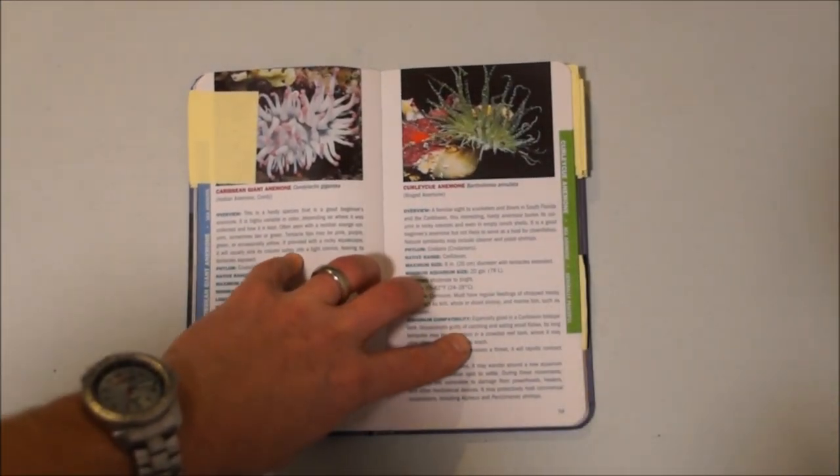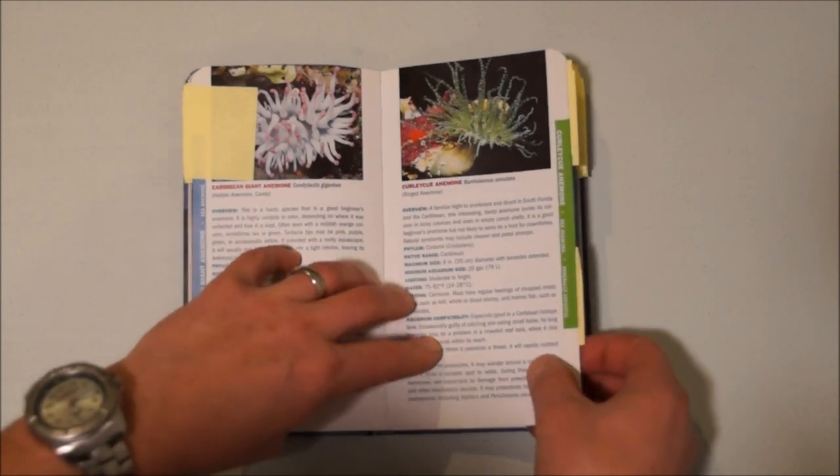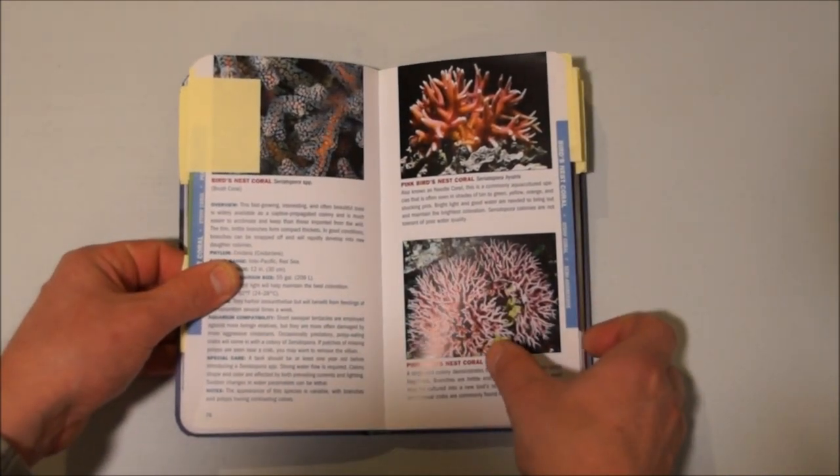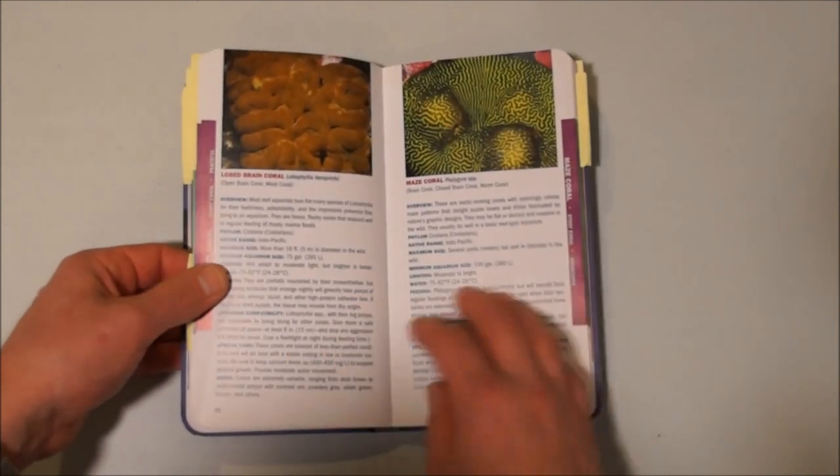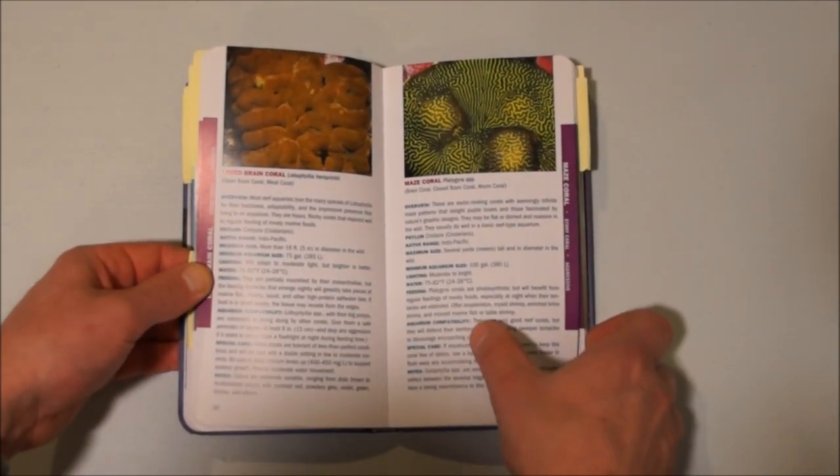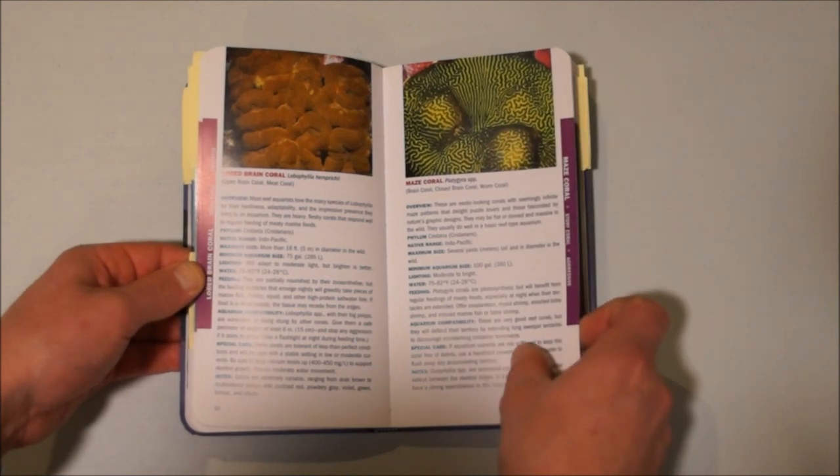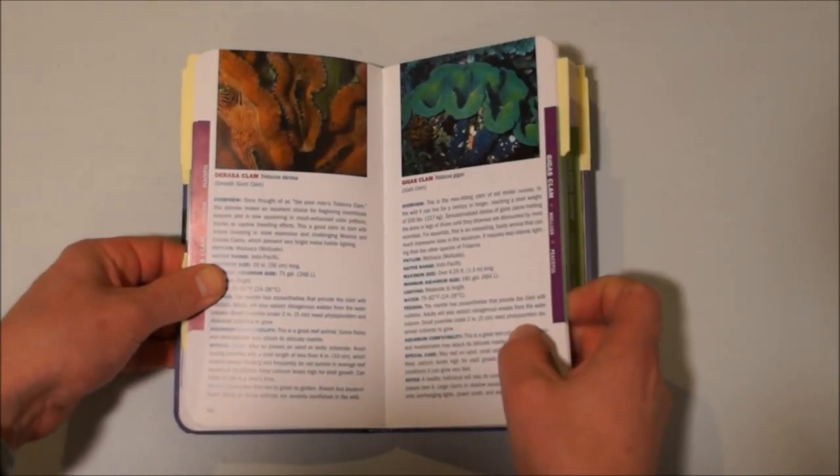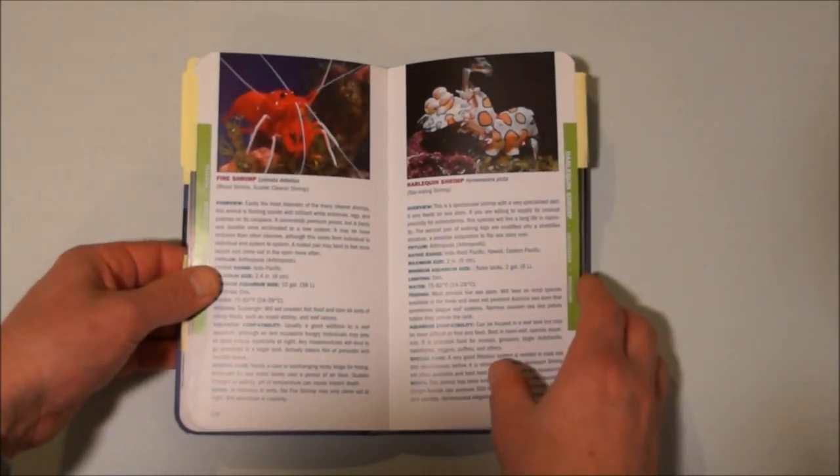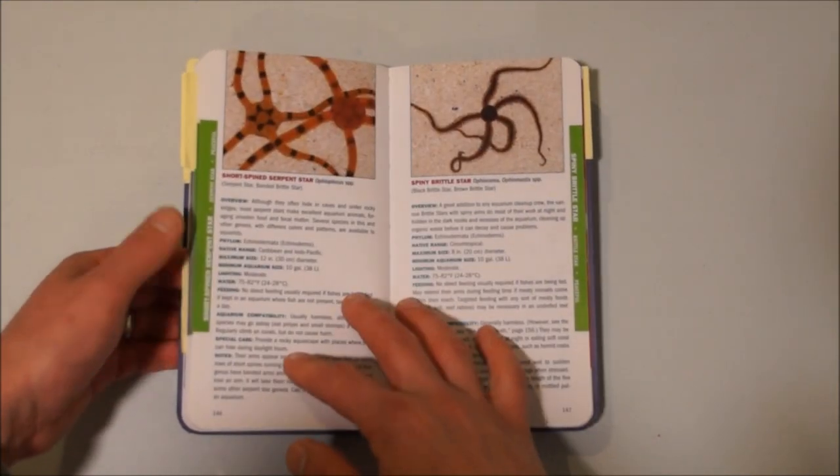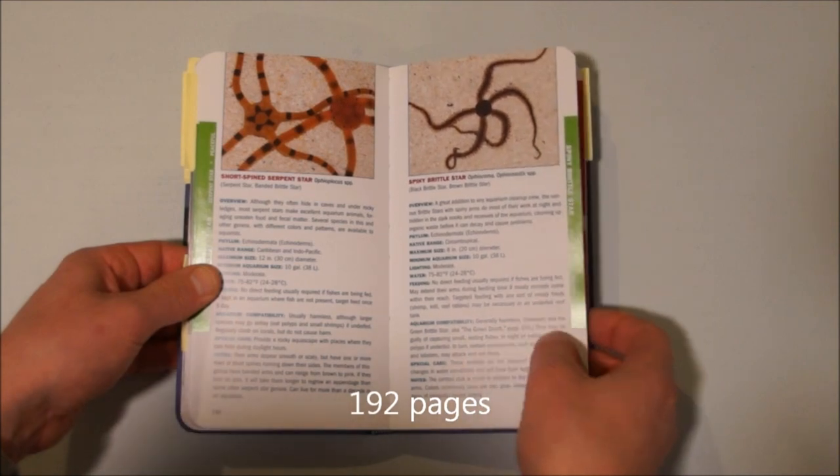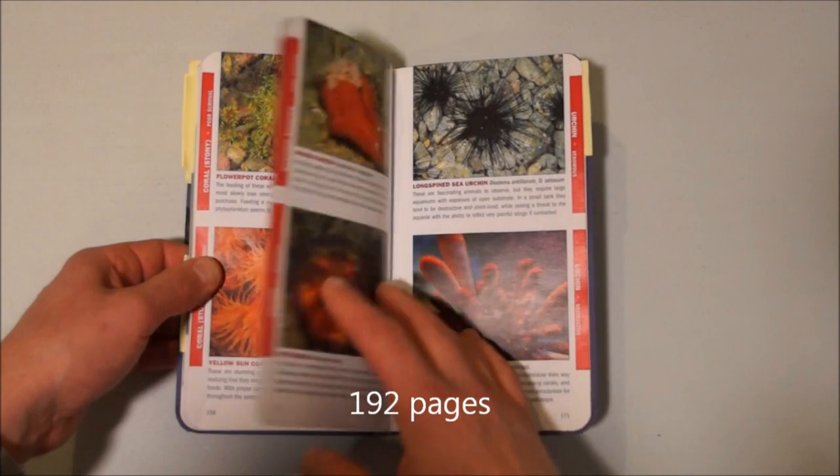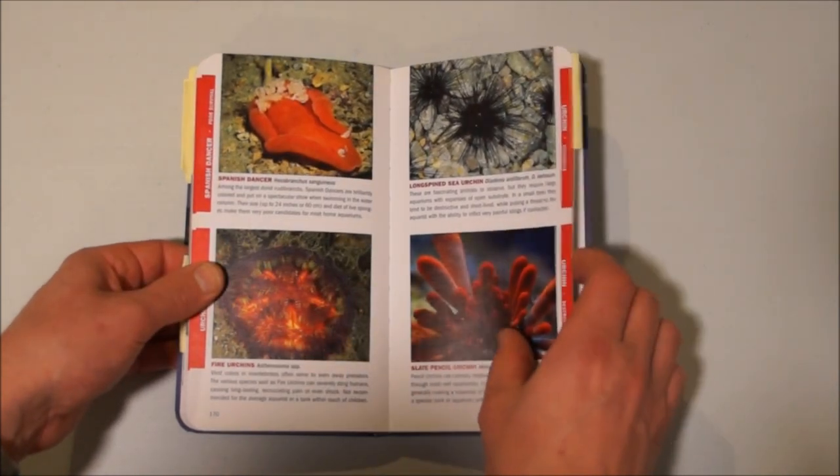So in comparison to the Marine Invertebrates by Ronald that we just did a little bit ago, this book is not as in-depth. The pictures are fantastic and yes it's got my sticky notes on it because obviously I've used it quite heavily. I certainly like the book, but when it comes to the large variety that we're now starting to see in the industry in the last three or four years, this book doesn't quite have enough in it.